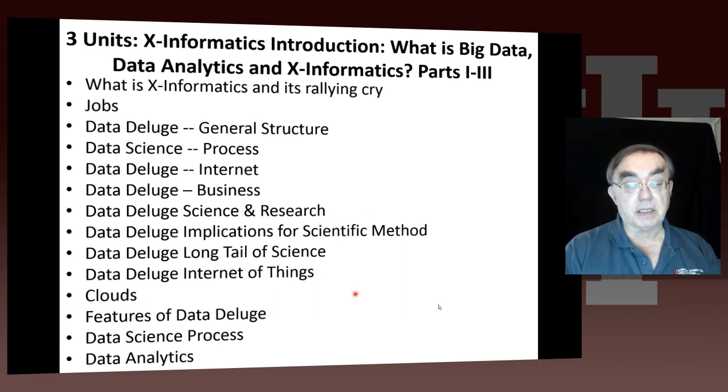And then we go to this very important Internet of Things. The number of things on the Internet is increasing 31% compound-wise year to year. We're going to reach 75 billion by 2020. Then we discuss clouds, the features of the data deluge, the data science process again, and data analytics.